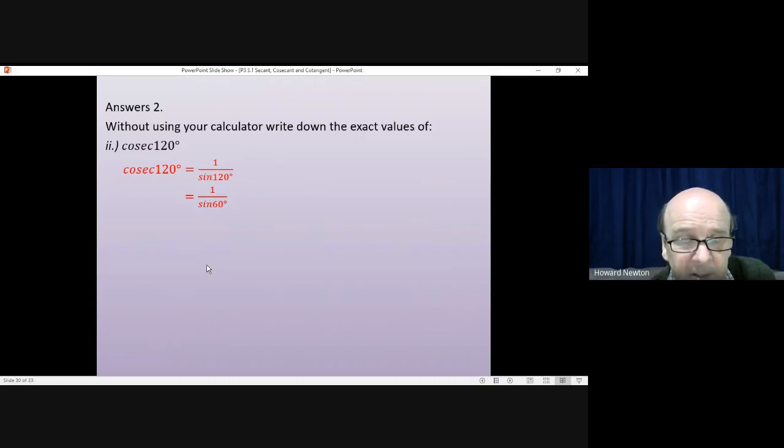Sine 60 is one of the standard values you're supposed to know. It's root 3 over 2. 1 divided by root 3 over 2 flips the fraction upside down, which gives you 2 over root 3.